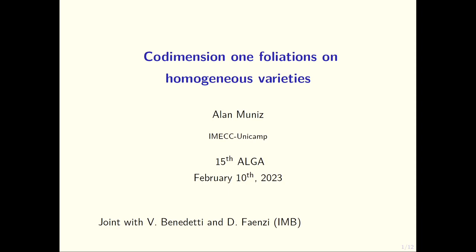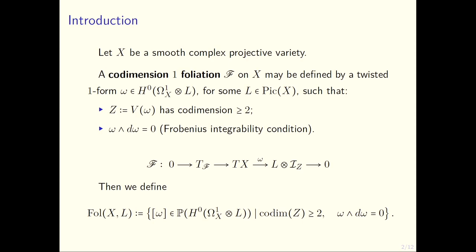Let me start by defining what's a foliation. The simplest definition is that a foliation can be defined by a twisted 1-form, a global section of the cotangent bundle of the variety twisted by some line bundle L.